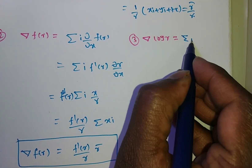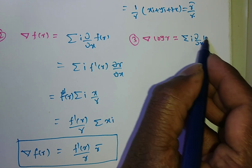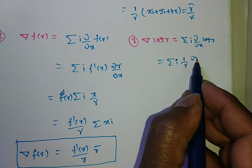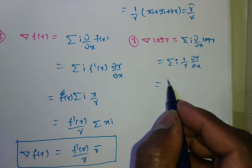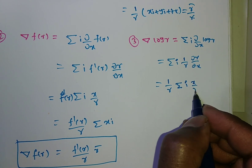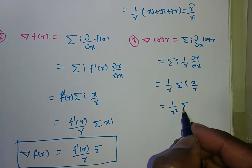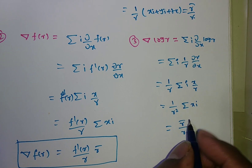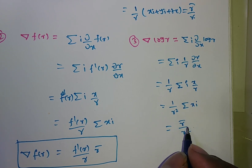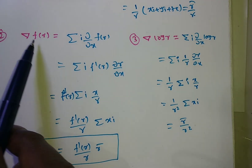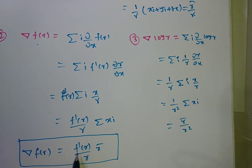Del log r = Σi · (∂/∂x)(log r) = Σi · (1/r) · (∂r/∂x). Taking 1/r outside, then ∂r/∂x = x/r, so taking 1/r outside again gives (1/r²) · Σxi = r̄/r². Therefore del log r = r̄/r². This is consistent with the general formula: f'(r) = 1/r, so f'(r)/r = 1/r², confirmed.